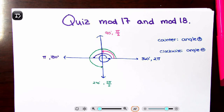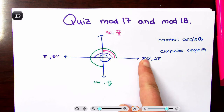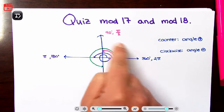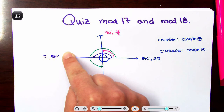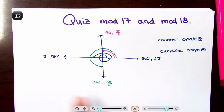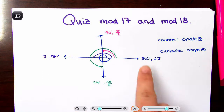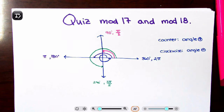Now the cycle doesn't end with one revolution. The cycle continues. So you can have 4π, 4π plus π/2, 4π plus 2π/2, and so on. That's why we have arrows. Remember, if you're going negative, then the quarter and the three-fourths positions — so π/2 and 3π/2 — will switch because the direction switches.